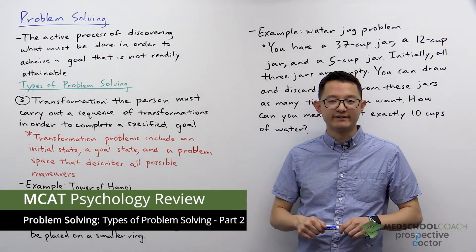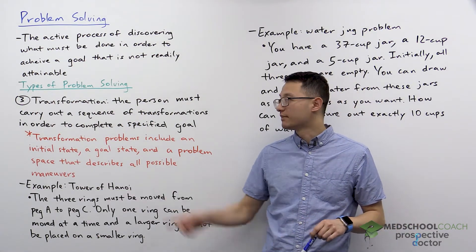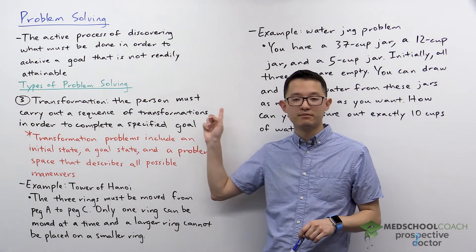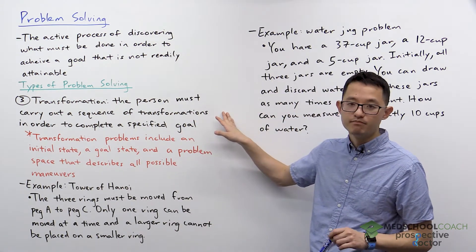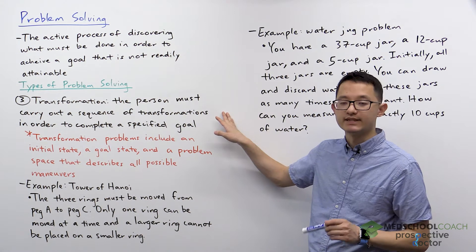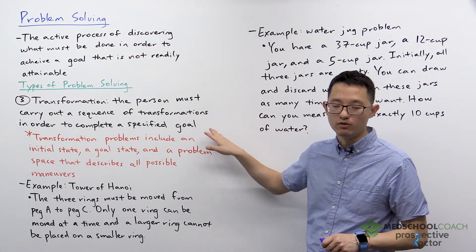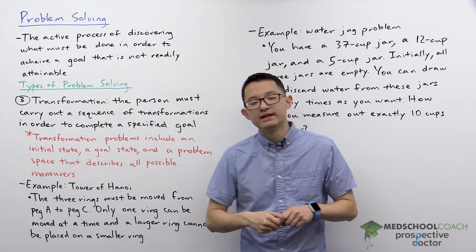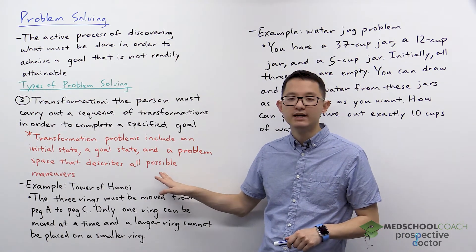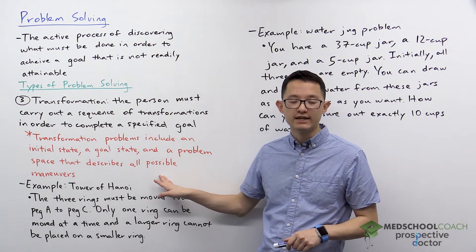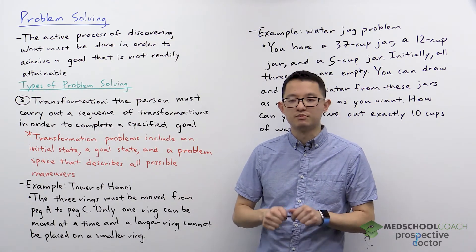In this video, we're going to continue our discussion on the different types of problem-solving by going over problems of transformation. In these problems, the person must carry out a sequence of transformations in order to complete a specified goal. In these types of problems, we have what is called an initial state, a goal state, and a problem space that describes all possible maneuvers.